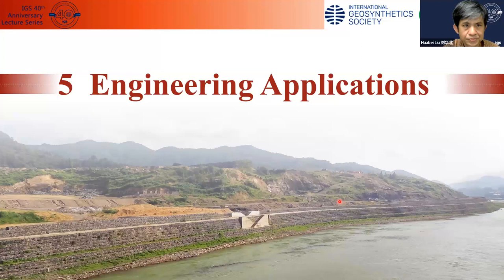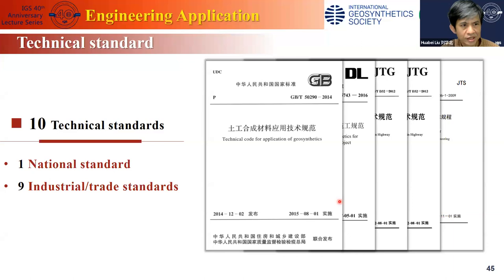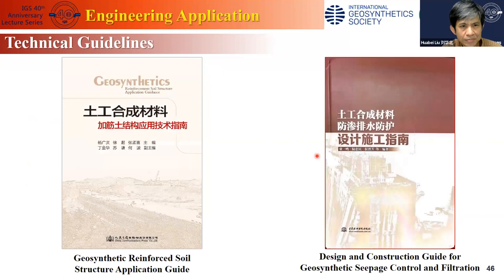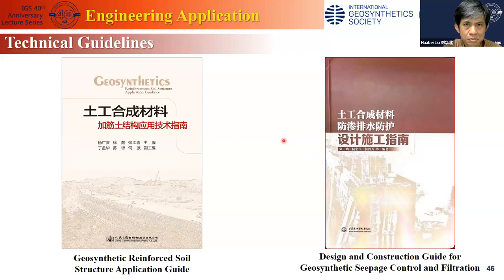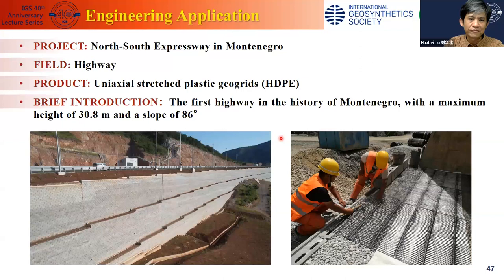Now let's move on to engineering applications. To promote engineering application of geosynthetics, the central government and CTAG have established technical standards. Right now there is one national standard — the technical code for application of geosynthetics — along with nine industrial and trade standards for different purposes. Two technical guides have recently been published: one on geosynthetic reinforced soil structure design, and another on design and construction for geosynthetic seepage control and filtration.